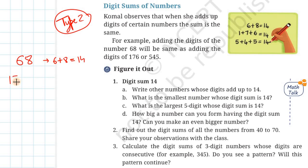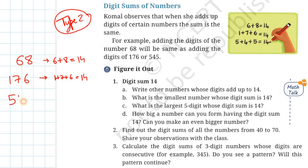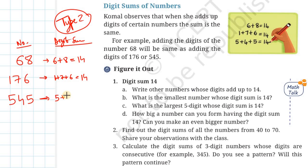Next, 176. Again, add the digits of this number: 1 plus 7 plus 6. This is again 14. Next, 545. Again, add the digits of the number. You will get 5 plus 4 plus 5, which is again 14.